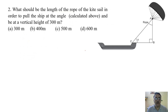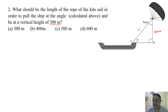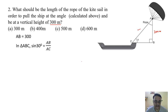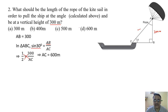Question 2: What should be the length of the rope of the kite to pull the ship at angle 30° and be at a vertical height of 300 meter? Using sin 30° = AB/AC: 1/2 = 300/AC. Cross multiplying gives AC = 600 meter. The correct option is option B.